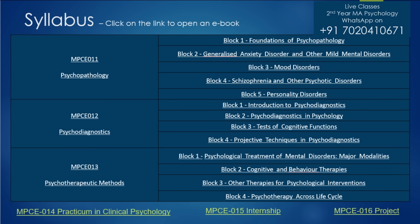Then we have MPCE 013, psychotherapeutic methods, where we talk about therapies for the disorders we have studied. In block one we cover psychological treatment of mental disorders — behavior therapy, cognitive therapy, psychoanalytic therapy, gestalt therapy, CBT (cognitive behavioral therapy), and individually cognitive and behavioral therapy. There is also the eclectic approach, where you take the best from multiple therapies, merge them, and formulate a single approach to help the client.